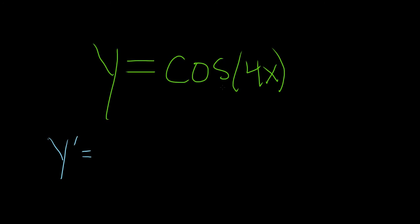So our outside function is cosine. So the chain rule says you take the derivative of the outside, which is negative sine,